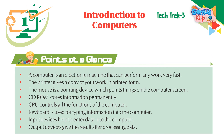Points at a Glance: A computer is an electronic machine that can perform any work very fast. The printer gives a copy of your work in printed form. The mouse is a pointing device which points things on the computer screen. CD-ROM stores information permanently. CPU controls all the functions of the computer. Keyboard is used for typing information into the computer. Input devices help to enter data into the computer. Output devices give the result after processing data.